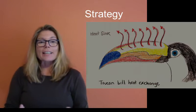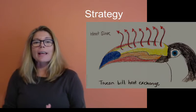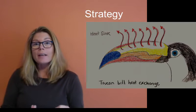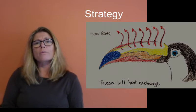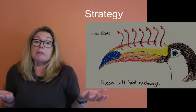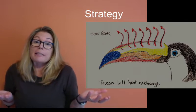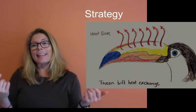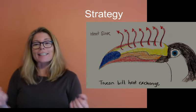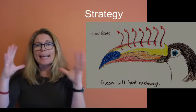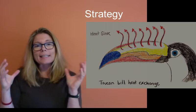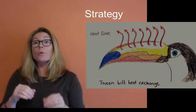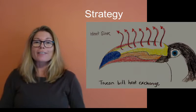The strategy is a general explanation of how the function is met. So we might ask: how does a toucan bill dissipate heat? We would discover that the strategy is to use the bill to radiate the excess heat from the warmer blood inside the bill to the cooler air surrounding it.